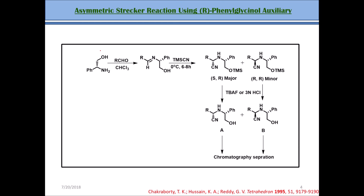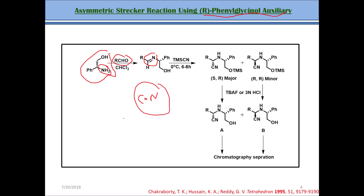One of the chiral auxiliaries used is called R-phenylglycinol. This compound is a pure R-enantiomer. When we add our aldehyde to R-phenylglycinol, an imine is formed — because NH2 reacting with any aldehyde leads to imine formation, and any functional group with a C=N is called an imine. Then we add the reagent TMSCN, which is trimethylsilyl cyanide. Its structure has silicon with three methyl groups and a nitrile group. TMSCN provides the CN minus, which comes and attacks the carbon.